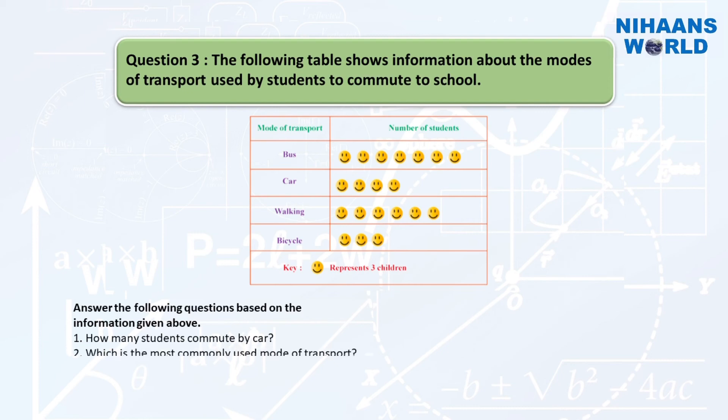One, how many students commute by car? Two, which is the most commonly used mode of transport? Three, which is the least preferred mode to reach school?